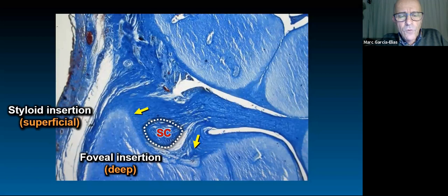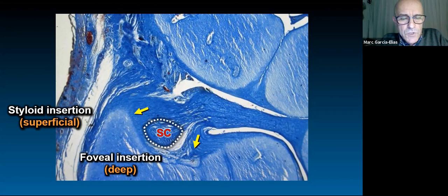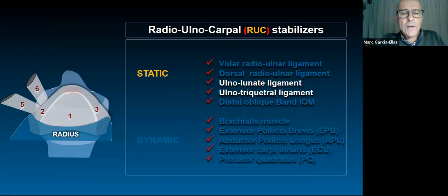Between the two insertions there is a space filled all around the TFCC with loose connective tissue containing plenty of nerves and vessels. Some authors use the term 'ligamentum subcruentum' to refer to this area. This represents the boundaries of the distal and proximal insertions of one ligament. The ulnocarpal ligaments are also important for the sagittal stability of the medial column of the wrist.